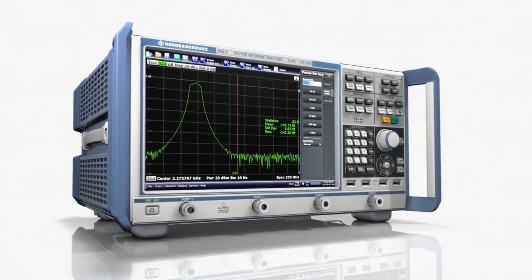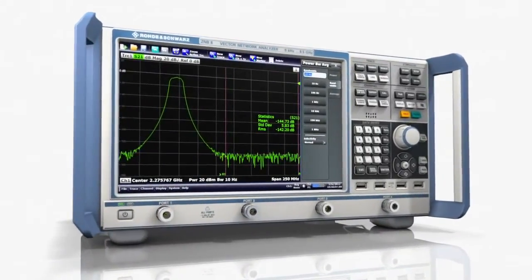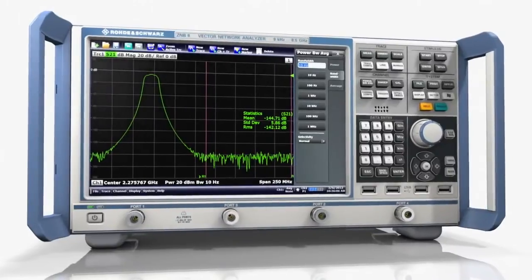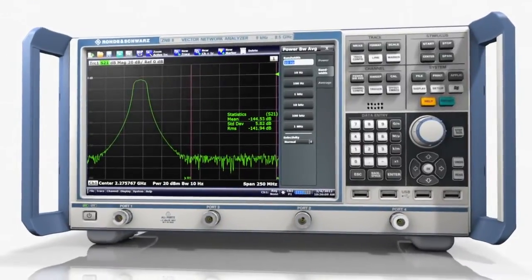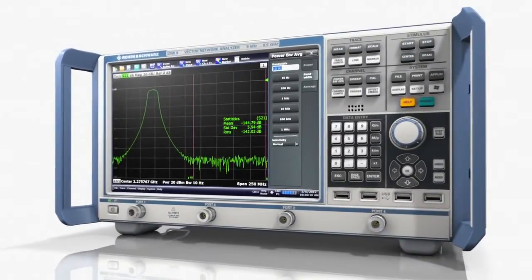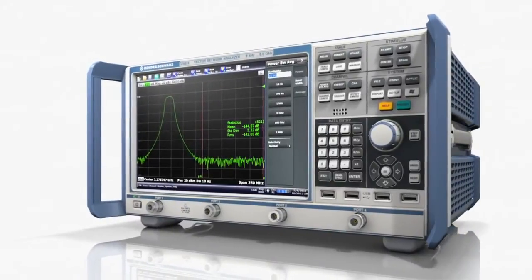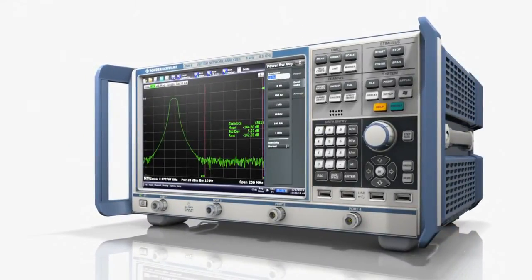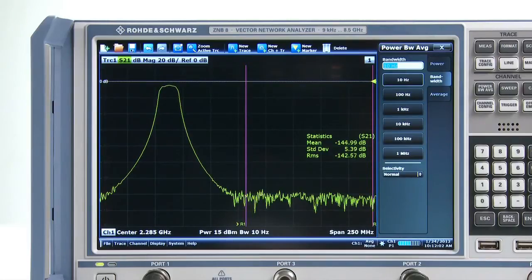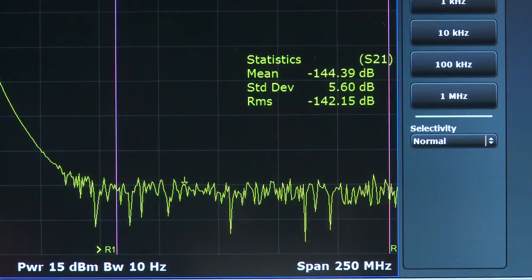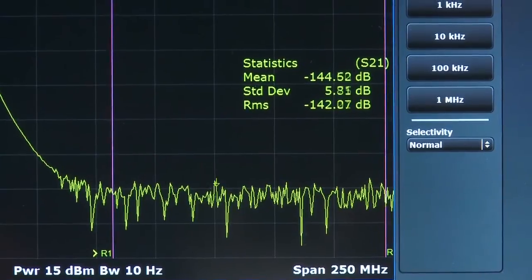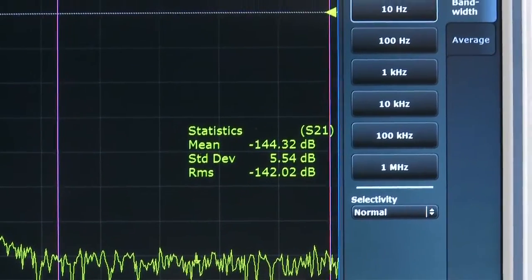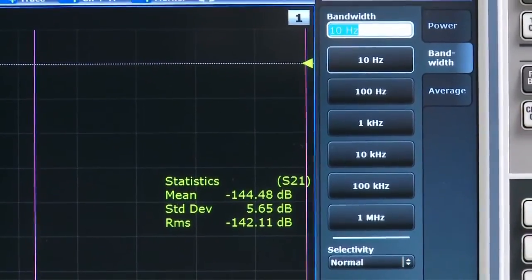The Rohde & Schwarz ZNB takes network analysis to a new level, not just in terms of operating convenience. It also demonstrates the performance that is possible in its class. For measurements close to the noise floor, as are needed for high blocking filters, the ZNB offers a dynamic range of over 140 dB at 10 Hz IF bandwidth.